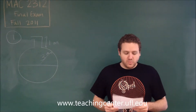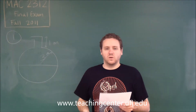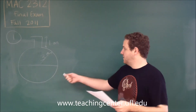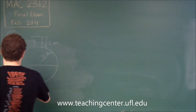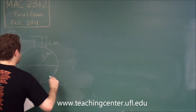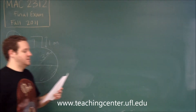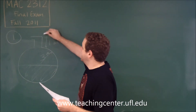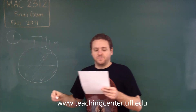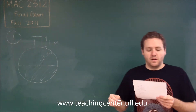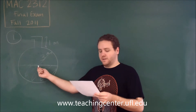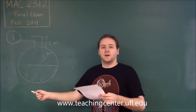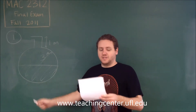For problem number one, we have a work integral. We have a spherical tank with radius of three meters, which is half filled with some liquid that has a density of 600 kilograms per meter cubed, and a vertical spout that is one meter high at the top. X is going to measure the depth below the center of the tank, so at the center X equals zero, and X increases down to a maximum of three at the bottom.